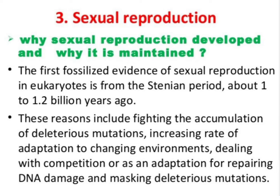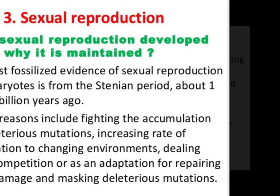Sexual reproduction: why sexual reproduction developed and why it is maintained. The first fossilized evidence of sexual reproduction in eukaryotes is from the Stanian period, about 1 to 1.2 billion years ago. Reasons include fighting the accumulation of deleterious mutations, increasing rate of adaptation to changing environments, dealing with competition, repairing DNA damage, and masking deleterious mutations.